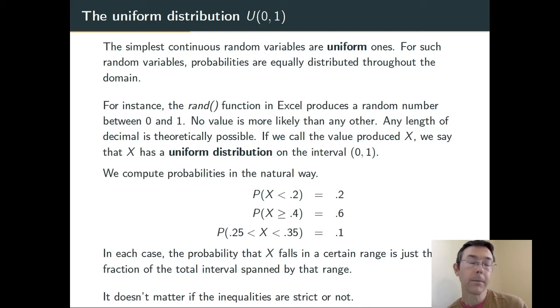One little comment here, it doesn't matter whether these inequalities are strict or not. In other words, it doesn't matter that we wrote X < 0.2 instead of X ≤ 0.2. Because when we're talking about continuous random variables, probabilities of individual outcomes are infinitesimal. They're basically 0.